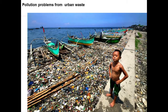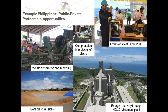Switching to other problems in the coastal zone, an example from the Philippines: a lot of environmental problems from urban waste, plastics and other elements. One approach we looked at and was very successful was a public-private partnership with a company, Holcim, that produced cement and needed fuel. What was set up was a waste separation and recycling facility, compression into blocks of plastic, and this was used as fuel in the cement plant.